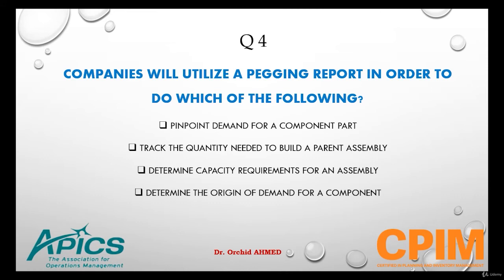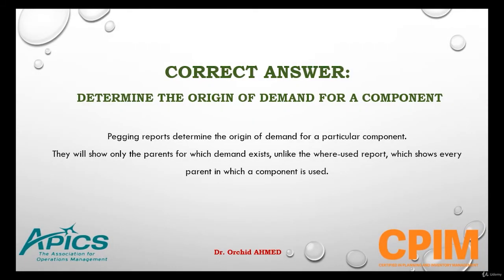Question number four: Companies will utilize a pegging report in order to do which of the following? Options are: pinpoint demand for a component part; track the quantity needed to build a parent assembly; determine capacity requirements for an assembly; or determine the origin of demand for a component. The pegging report is used to determine the origin of demand for a component. It will show only the parents for which demand exists, unlike the where-used report which shows every parent in which a component is used.